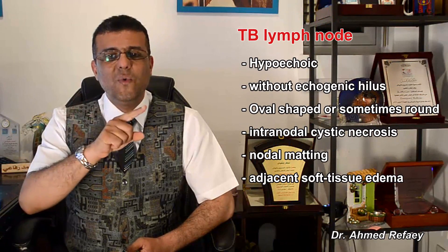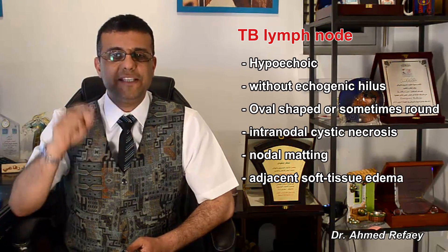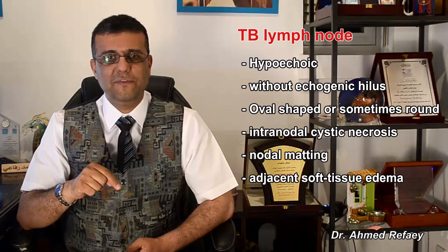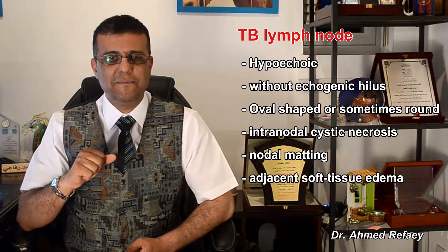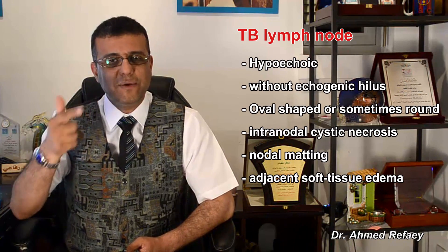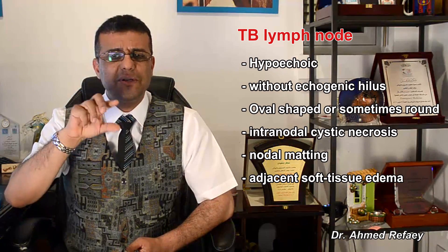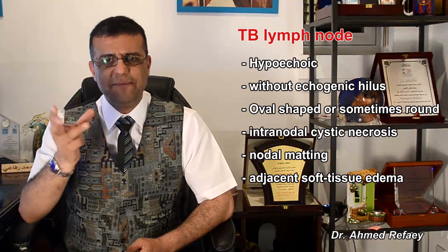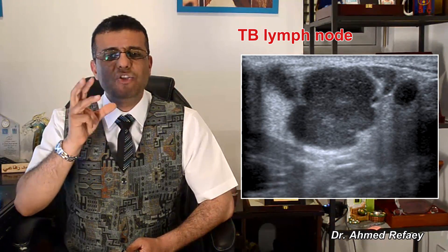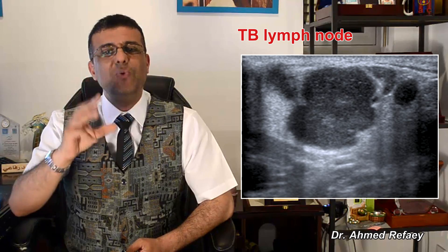The third category is the tuberculous lymph node. On gray scale ultrasound, the tuberculous lymph node is hypoechoic with loss of its normal hilum — this is a very important feature. It is oval shaped or sometimes rounded, and may show nodal matting and sometimes intra-nodal cystic necrosis, in addition to adjacent soft tissue edema.